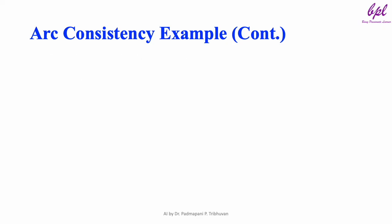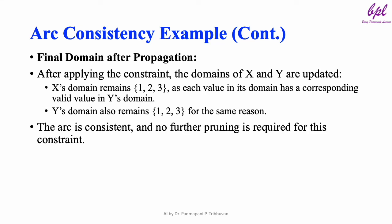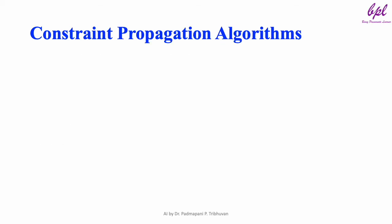After applying the constraint, the domains of X and Y are updated. X's domain remains 1, 2, 3, as each value in its domain has corresponding values in Y's domain. Y's domain also remains 1, 2, 3 for the same reason. The arc is consistent and no further pruning is required for this constraint.